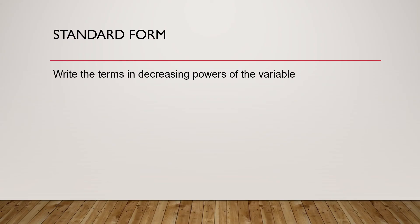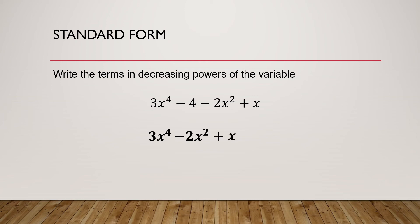We have to write the terms in decreasing powers of the variable. For example, we have 3x raised to the 4th minus 4 minus 2x squared plus x. The first term would be 3x raised to the 4th power since 4 is the highest degree, followed by negative 2x squared, then positive x, then negative 4. So the standard form is 3x to the 4th minus 2x squared plus x minus 4.